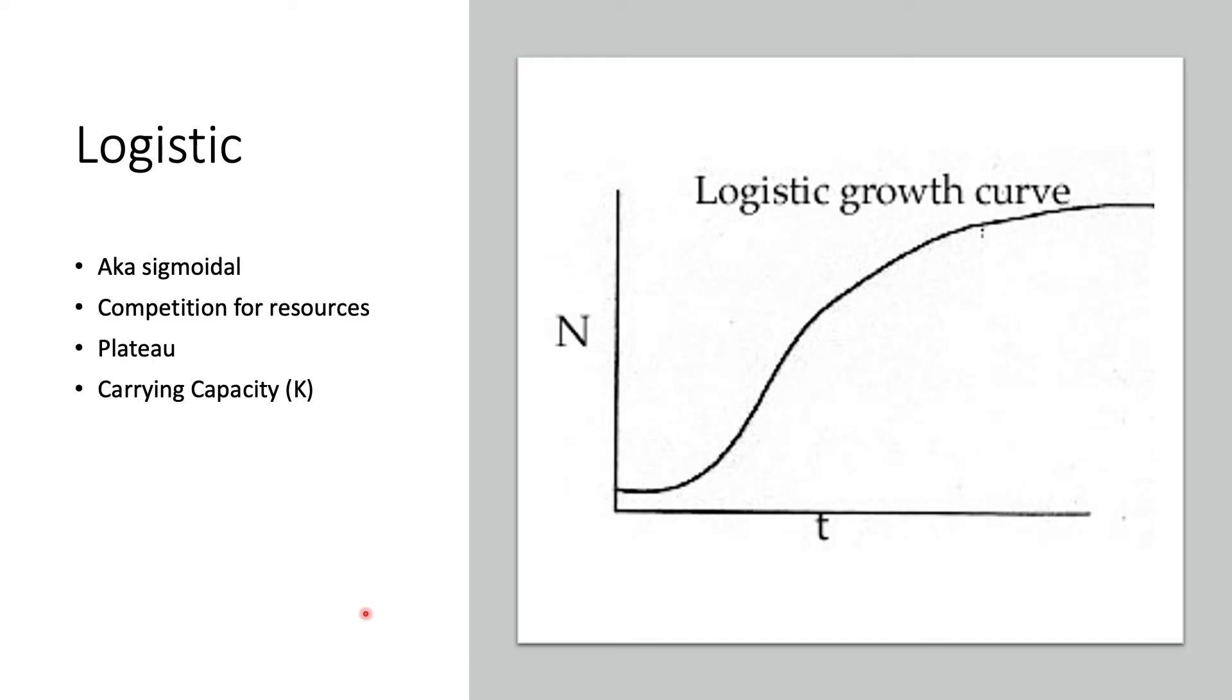Exponential growth may occur in environments where there are fewer individuals and a lot of resources, but when the number of individuals gets large enough, resources will eventually deplete and the growth rate will slow down. Eventually the growth rate will plateau, so you can see we start exponential here in a logistic curve but eventually we plateau.